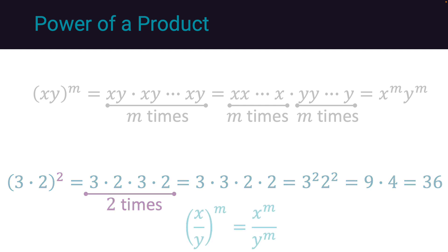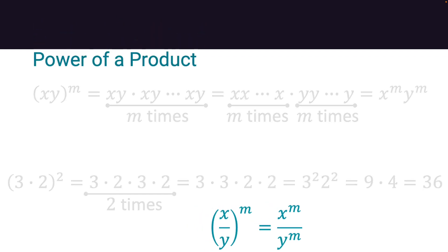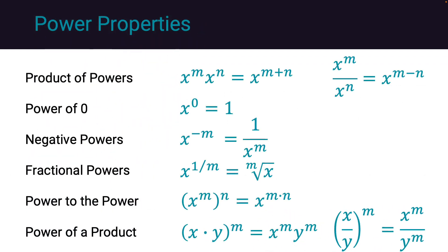It is important to note that when we have a ratio, the equivalent happens where x over y to the m is equal to x to the m over y to the m. Here we present, again, the power properties we just covered.